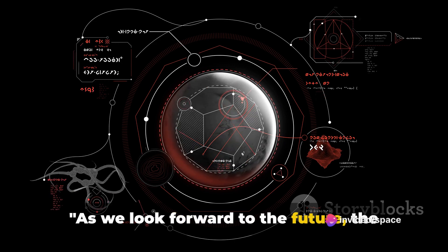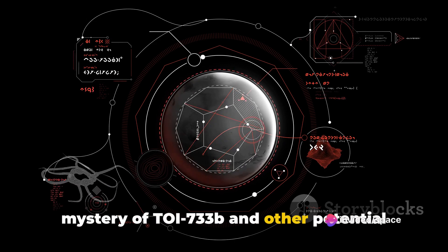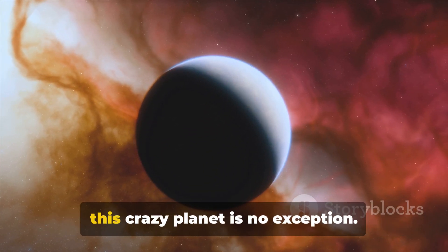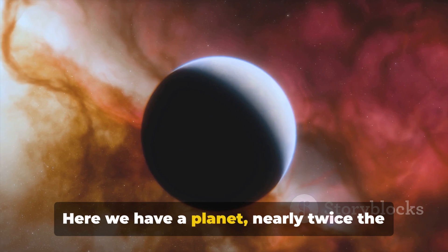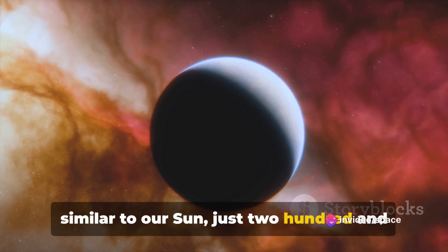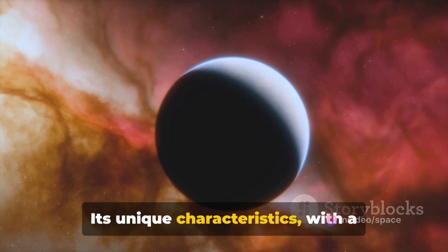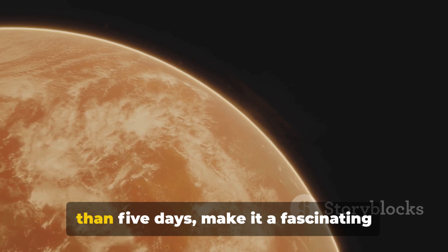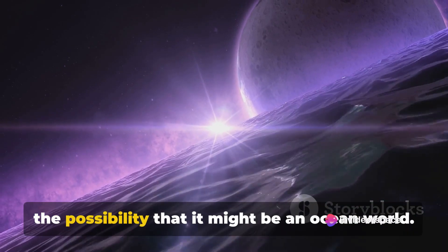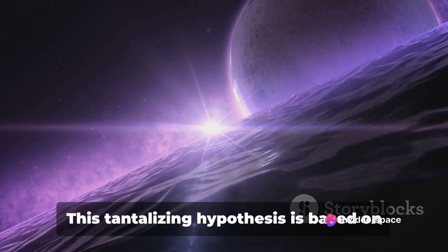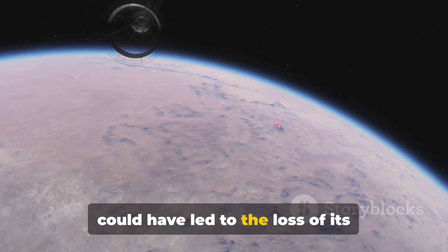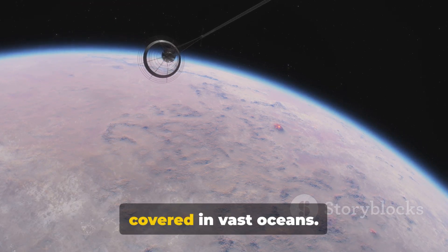As we look forward to the future, the mystery of TOI-733b and other potential ocean worlds beckons us, promising a voyage of cosmic discovery. The cosmos never ceases to amaze us, and this crazy planet is no exception. Here we have a planet nearly twice the radius of our Earth, orbiting a star similar to our Sun, just 245 light-years away. Its unique characteristics, with a density akin to Mars and a period of less than five days, make it a fascinating object of study. But what truly sets TOI-733b apart is the possibility that it might be an ocean world. This tantalizing hypothesis is based on its close proximity to its star, which could have led to the loss of its atmosphere, leaving behind a planet covered in vast oceans.